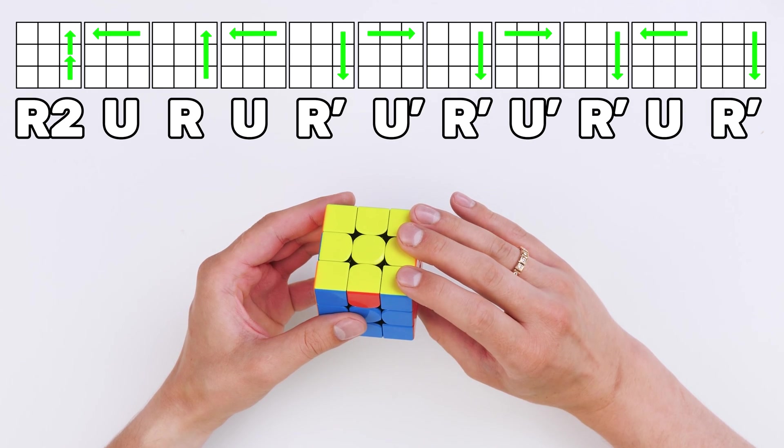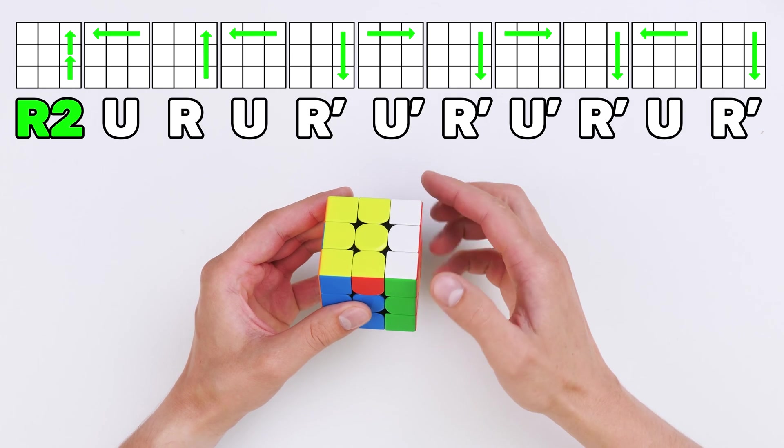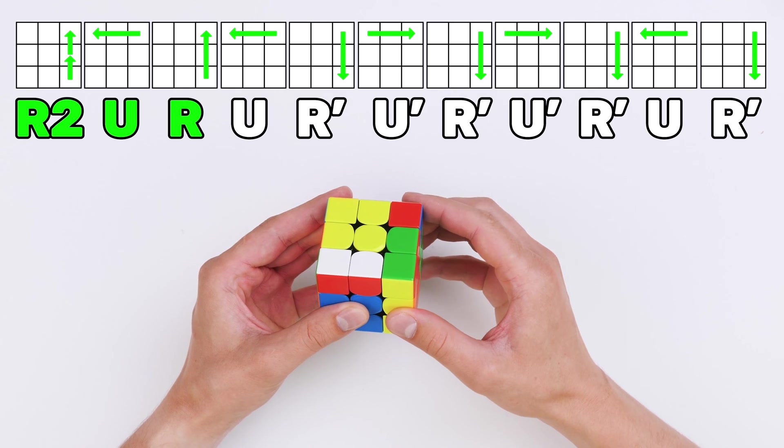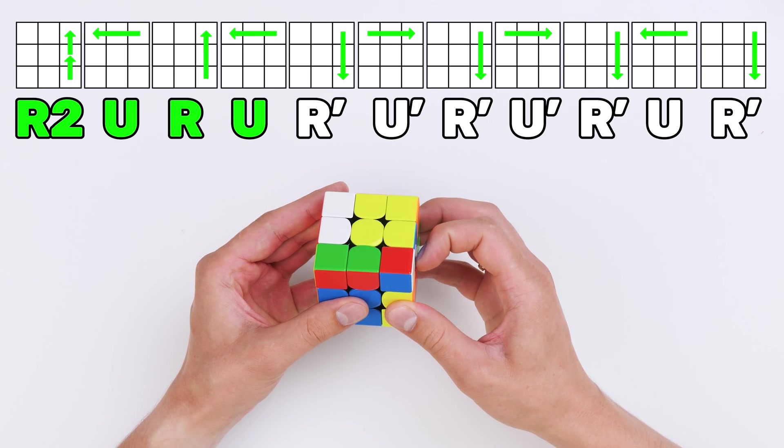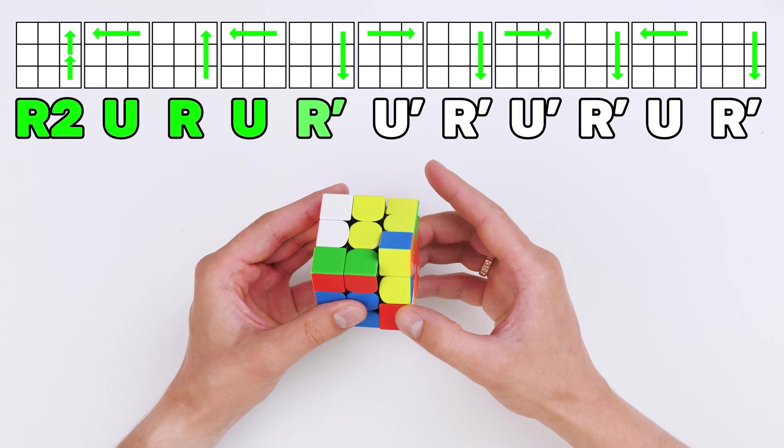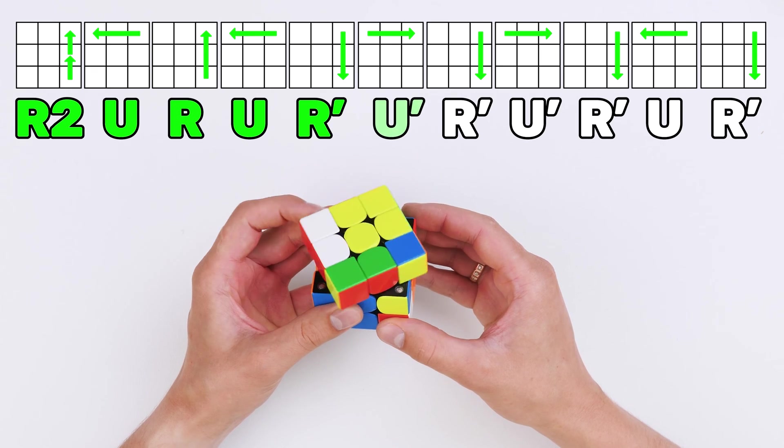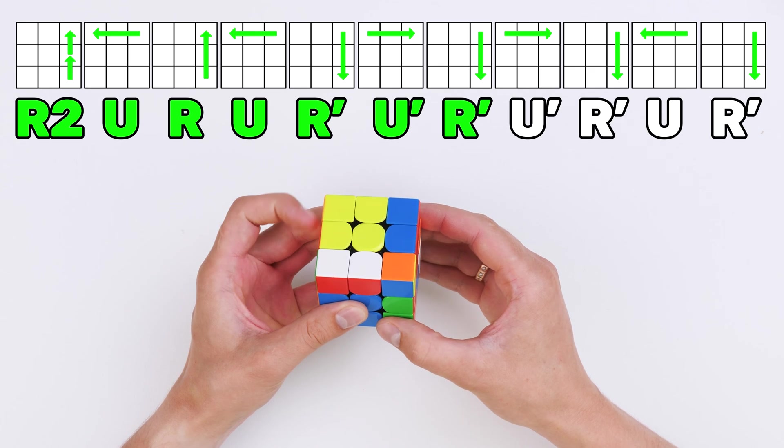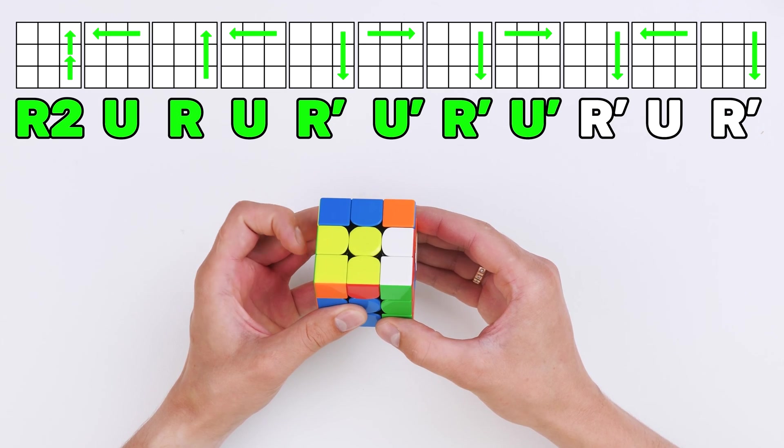Turn right side twice. Upper face clockwise. Right clockwise. Upper clockwise. Right counterclockwise. Upper counterclockwise. Right counterclockwise. Upper counterclockwise. Right counterclockwise.